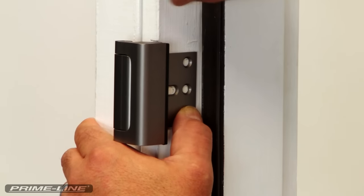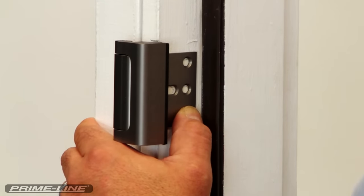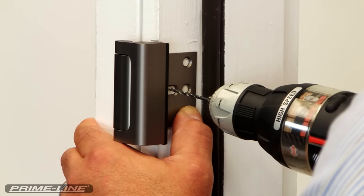Okay, so I have the lock aligned to my top mark here and on the backside. Now I'm just going to drill a pilot hole in the center of the oblong hole.